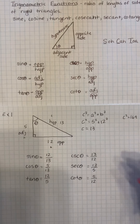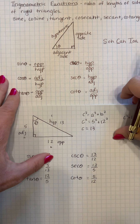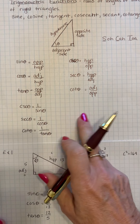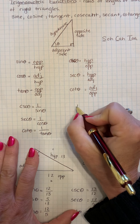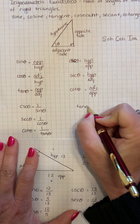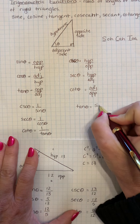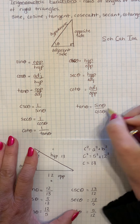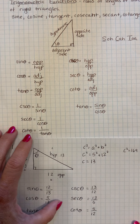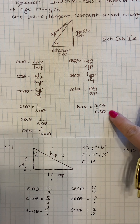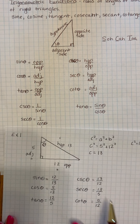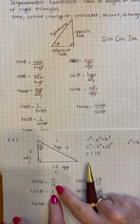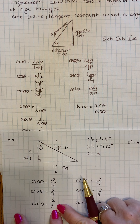Another special relation I want you to know: the tangent of theta equals the sine of theta divided by the cosine of theta. You'll use that a lot in trig. If I take the sine (12/13) and divide it by the cosine (5/13), the 13s cancel and I get 12 over 5 — so it does work out.